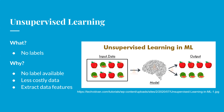Before we get into autoencoders, it's best to start with unsupervised learning, since autoencoders fall under that umbrella. In machine learning there's both unsupervised and supervised learning. With supervised learning you have an answer key called labels — for example, an image of an apple has a label saying it's an apple. With unsupervised learning, you don't have those labels.